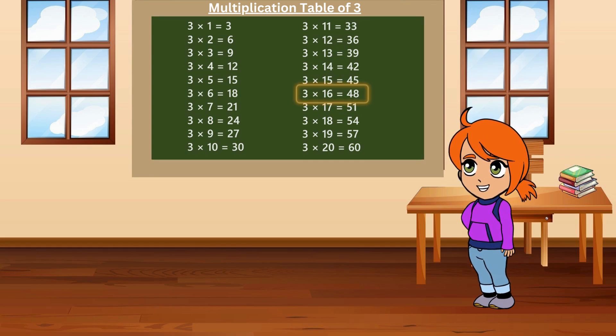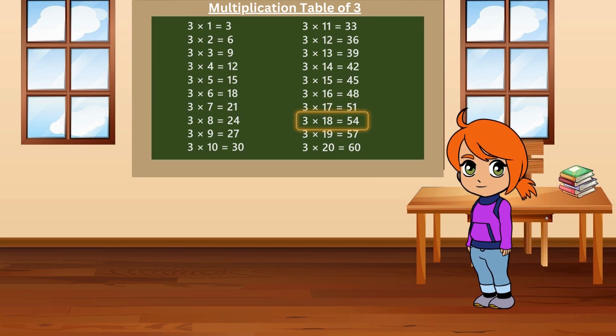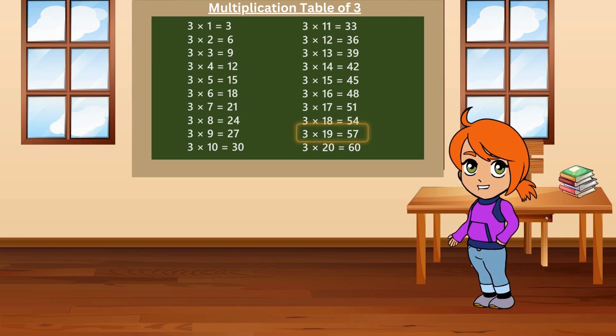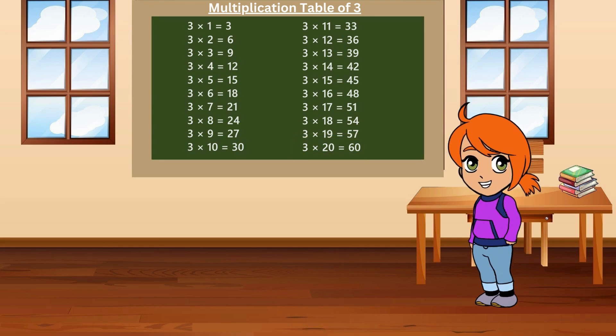Three sixteens are forty-eight. Three seventeens are fifty-one. Three eighteens are fifty-four. Three nineteens are fifty-seven. Three twenties are sixty. That's all for today.